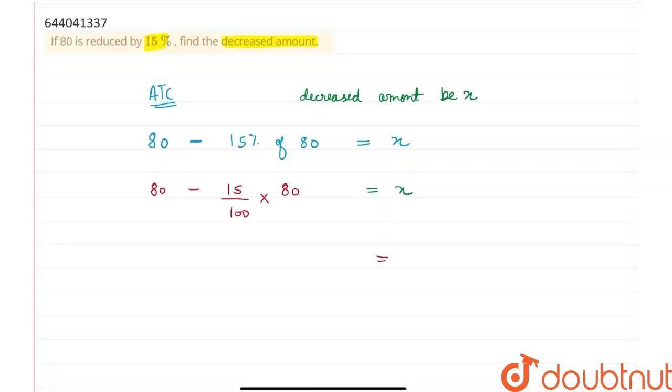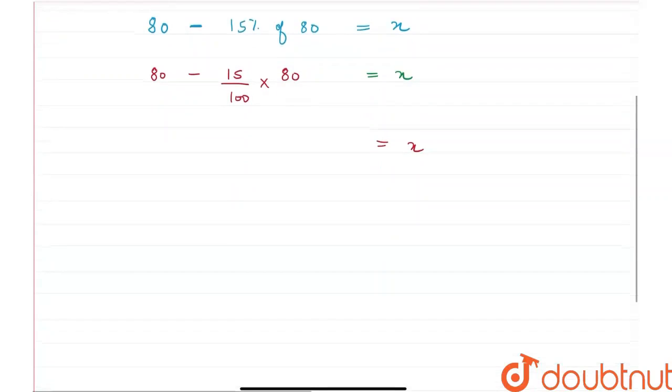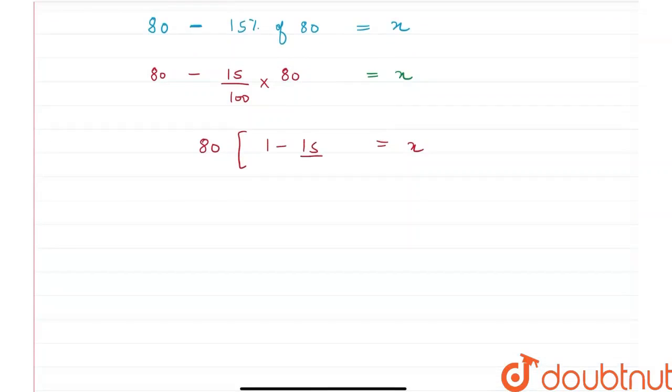Therefore, I can take my 80 common. I will be left with 1 minus 15 upon 100, and that would be x.